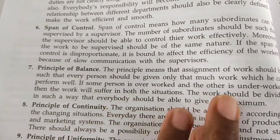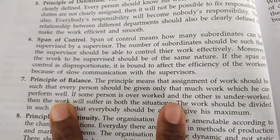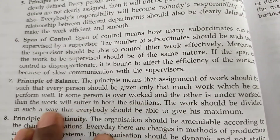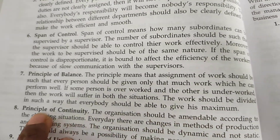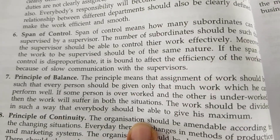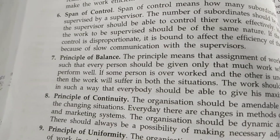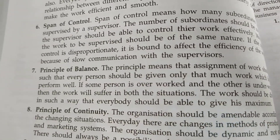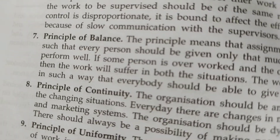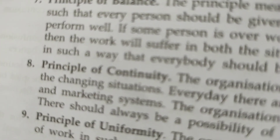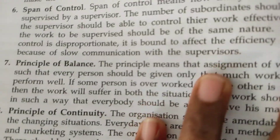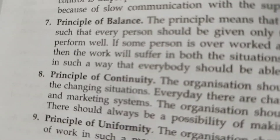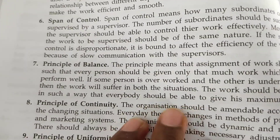Next is the principle of balance. The assignment of work should be such that every person is given only as much work as they can perform well. If some persons are overworked and others are underworked, the work will suffer in both situations. The work should be divided in such a way that everybody can give their maximum — not too much and not too little, but balanced as per their efficiency.